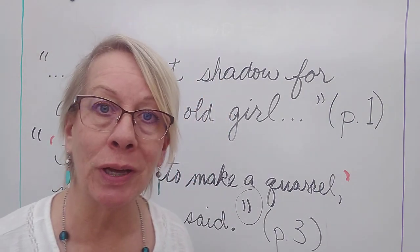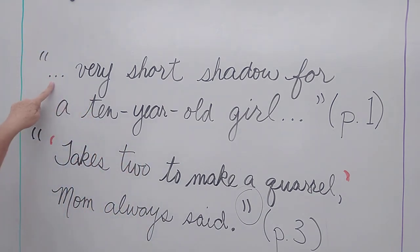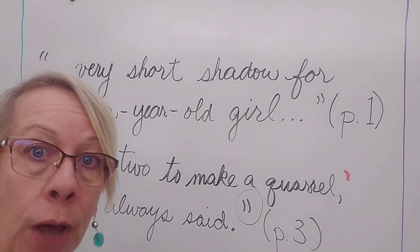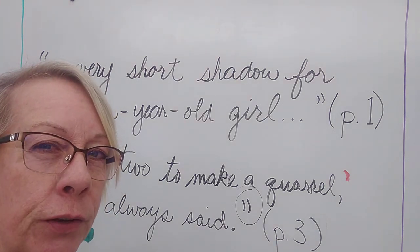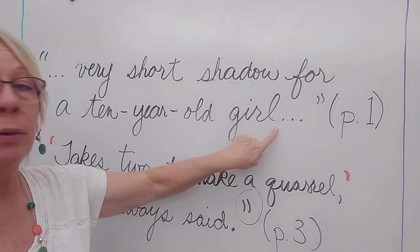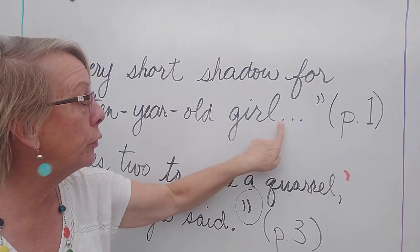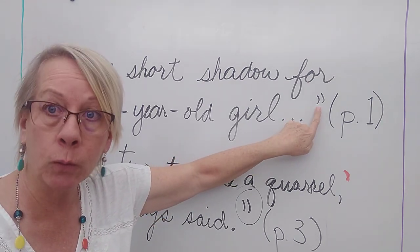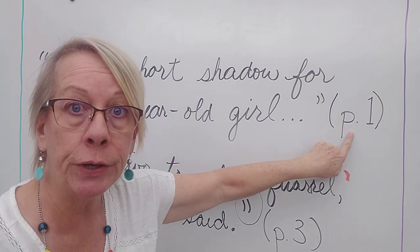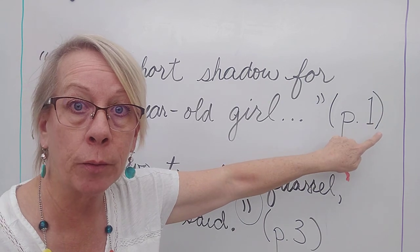So if you're quoting from the middle of a sentence, if it's not the beginning of the sentence, you put the quote mark, then you put the three dots. We call them dot, dot, dot, but they're actually called ellipses if you're going to be technically correct. Then you write the quote. A very short shadow for a ten-year-old girl, but this wasn't the end of the sentence either. So we put the ellipses again, and then the quote mark, and then we put a parenthesis, a P period, and the page number that it was actually on, and then another parenthesis.